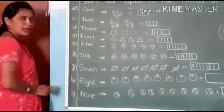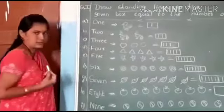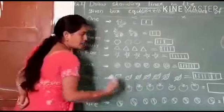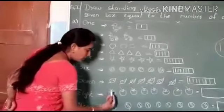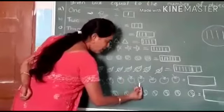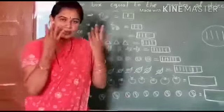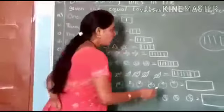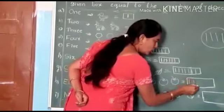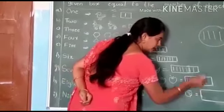Then H — next one, E-I-G-H-T, 8. Number is eight. How many objects are there? Count with me: one, two, three, four, five, six, seven, eight. So we should draw here one, two, three, four, five, six, seven, eight standing lines.